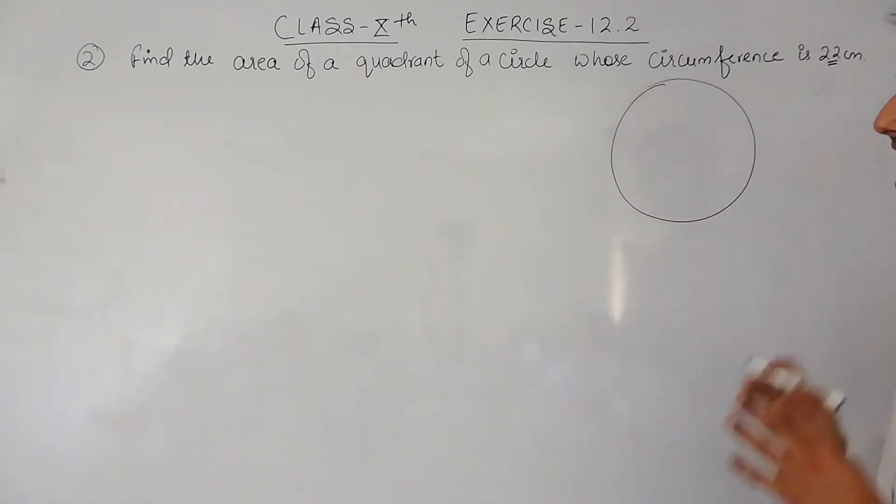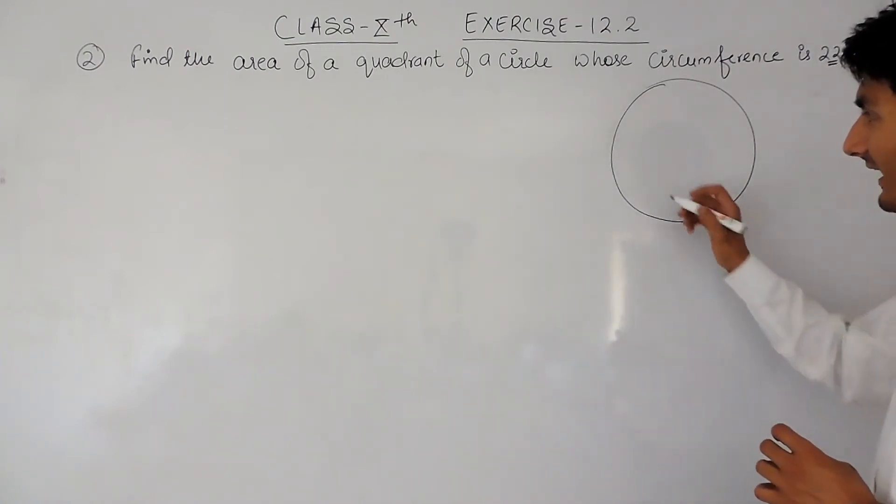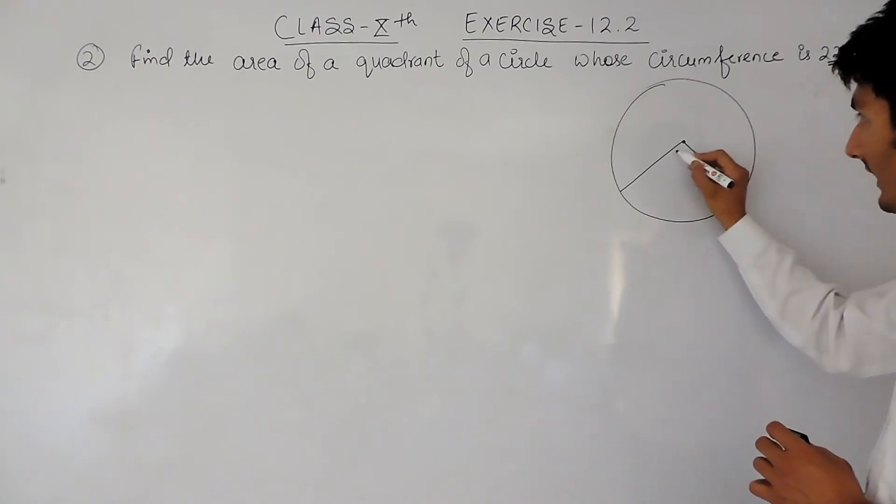You have to find the area of the quadrant. Quadrant is nothing but a sector when a sector subtends an angle of 90 degrees at the center. In that case, the sector becomes a quadrant.